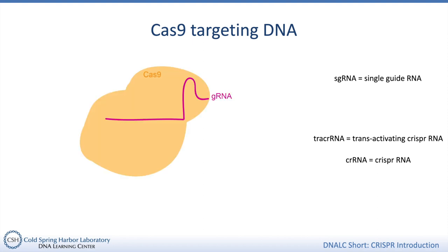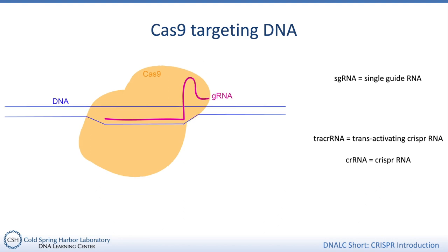This is my depiction of that complex here. In the lab, scientists usually synthesize the final hybrid RNA as a single RNA, skipping the step where the two RNA molecules have to come together to form a hybrid. So now we have a piece of RNA stuck to a protein. The crRNA part binds to its complementary sequence in the DNA. There are about 20 bases in the crRNA that determine where Cas9 will cut, because those 20 bases will only base pair with their complementary sequence in DNA, not just anywhere. So crRNA guides Cas9 to that sequence, hence the name single guide RNA.